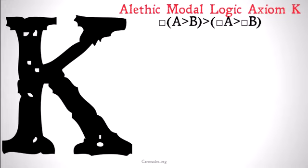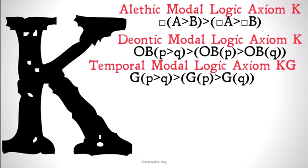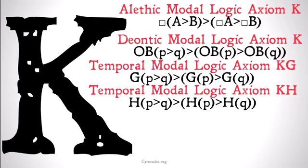Remembering from alethic modal logic, axiom K looks like this: it's necessary that A implies B, implies that it's necessary that A implies it's necessary that B. In deontic modal logic, it looks very similar: it's obligatory that P implies Q, implies that it's obligatory that P implies it's obligatory that Q. And temporal logic is not going to be much different.